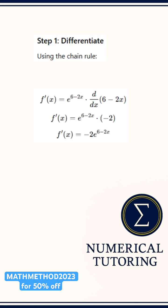Step 1: Differentiate using the chain rule. The derivative of e to the power of 6 minus 2x is e to the power of 6 minus 2x times the derivative of the inside, which is negative 2.